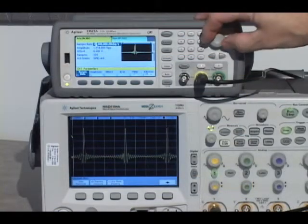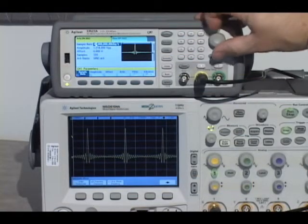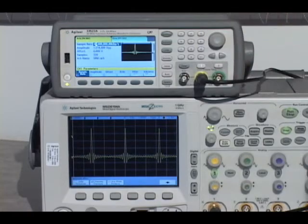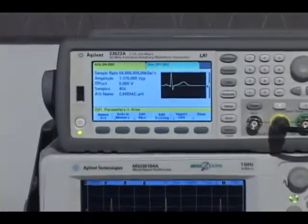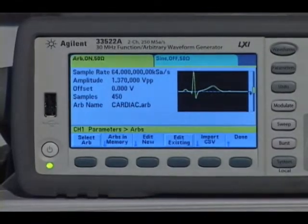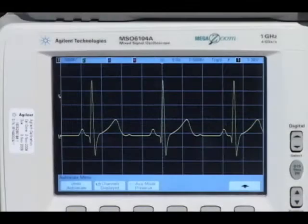Arbitrary waveforms of up to 1 million points per channel, or optionally 16 million points per channel, can be generated. Individual arbitrary waveforms or segments can be combined into user-defined sequences to form longer, more complex waveforms.